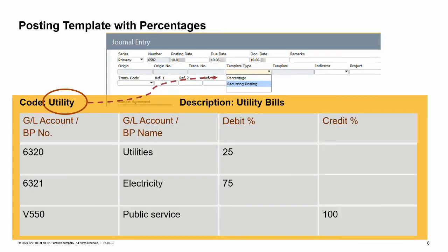You can create posting templates for journal entries that have a very similar structure. To define a percentage template type, use the posting templates window in the financials module. These templates can contain account numbers, but you can also just specify an account description and a line item if you do not yet know which exact account will be used. Instead of fixed amounts, only percentages are entered here. These percentages indicate how the total amount is distributed among the line items. The illustration shows an example of how you can allocate a utility expense, like the electric bill, to its component expenses at a specific percentage rate.